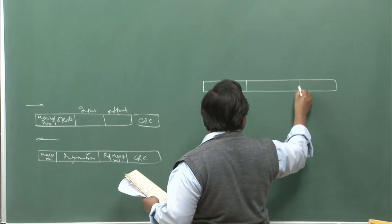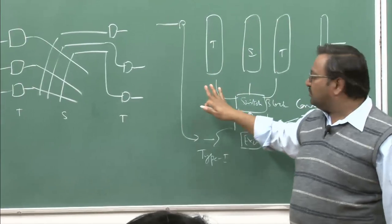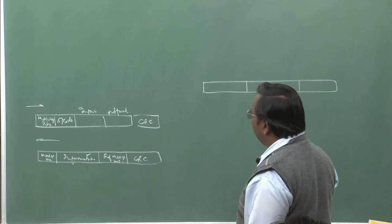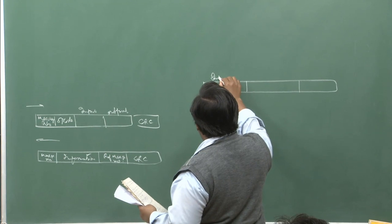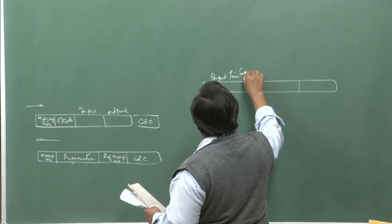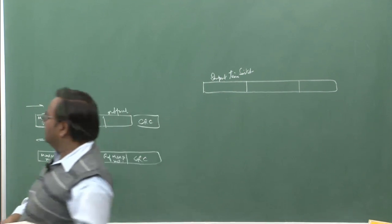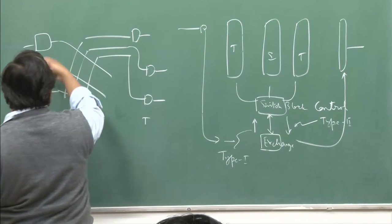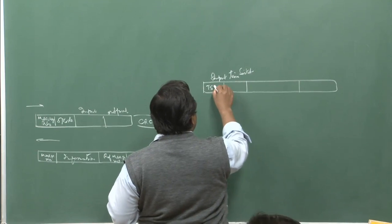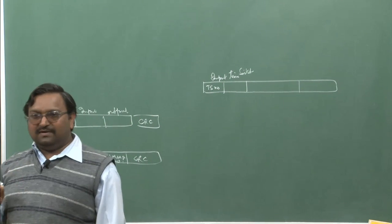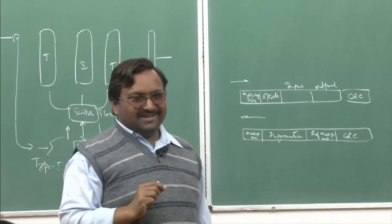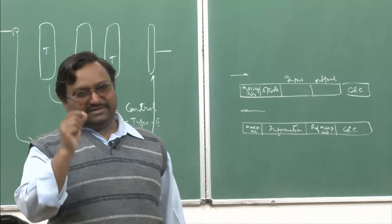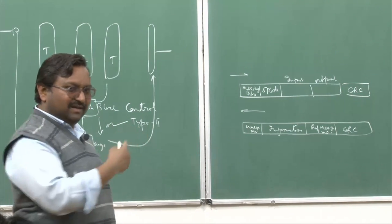There are three stages, so there must be a component for each. The component for the first time stage is the input time switch. I have to specify which time switch number — there can be multiple, for example numbered 0, 1, and 2. I am not writing the address of the control memory where I am going to write; that is decided by the counter output. That was the reason why write-cyclic and read-acyclic was used.